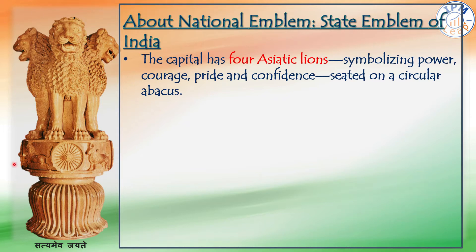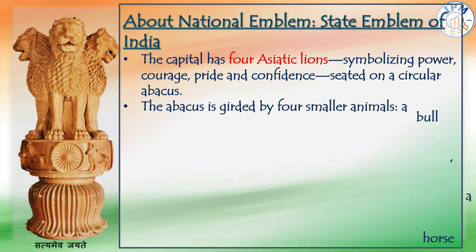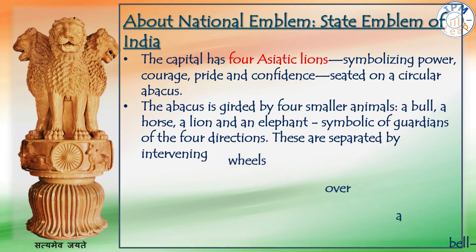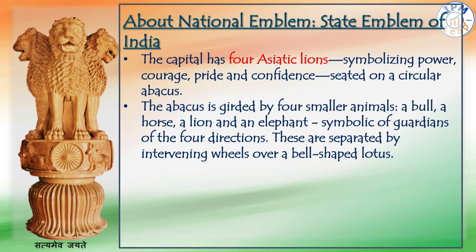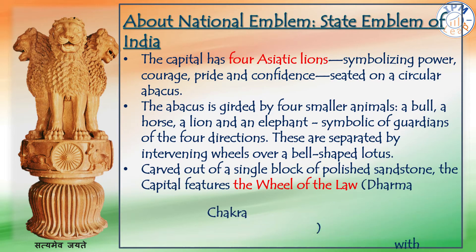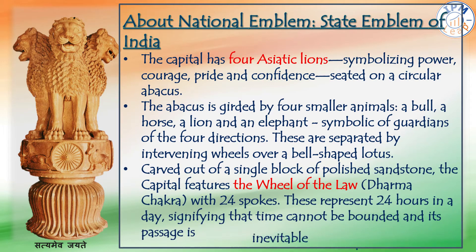The lions are seated on a circular abacus. The abacus is girded by four smaller animals — a bull, a horse, a lion and an elephant — symbolic of guardians of the four directions, separated by intervening wheels over a bell-shaped lotus. Carved out of a single block of polished sandstone, the capital features the wheel of the law, the Dharma Chakra, with 24 spokes, representing 24 hours in a day, signifying that time cannot be bounded and its passage is inevitable.